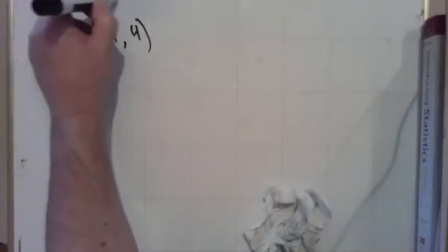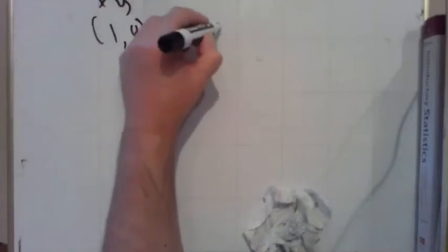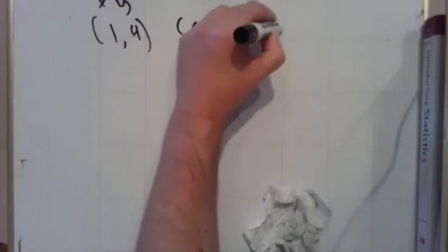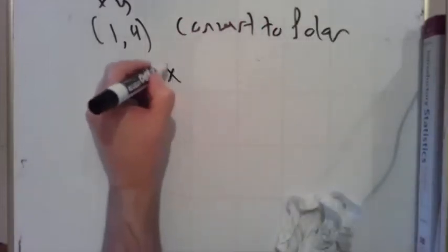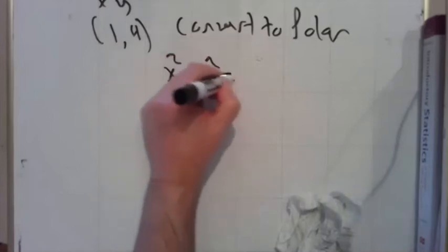Okay, so let's say we have the point, I'm just going to make one up: one, four. So that's my x and my y. I want to convert to polar. Okay, so I'm going to use these transformations.